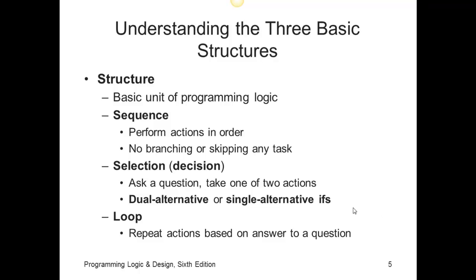The second structure is the selection or decision. We ask a question and then take an action based on the answer to the question. The question is going to be in the form of some sort of Boolean expression. Does the answer to the question result in true or false, yes or no? We're going to talk about dual alternative and single alternative ifs in selections. The third structure is called the loop. A loop repeats an action or a series of actions, again based on the answer to a question.